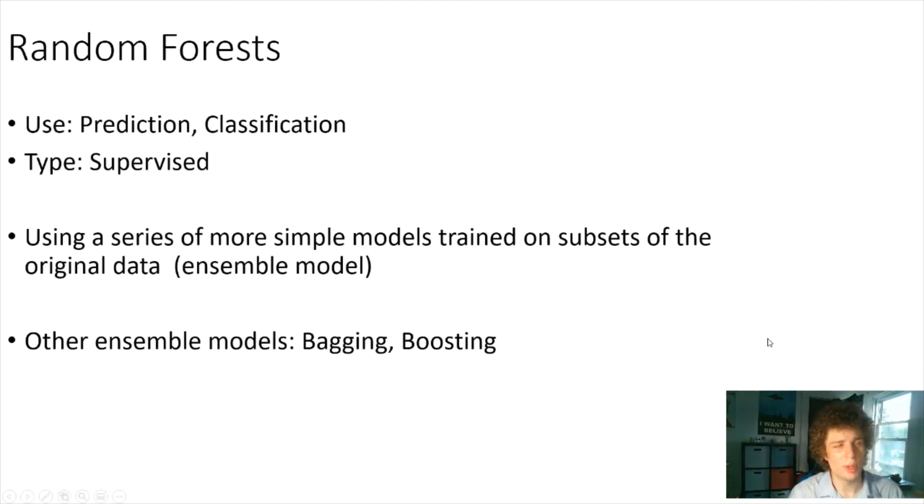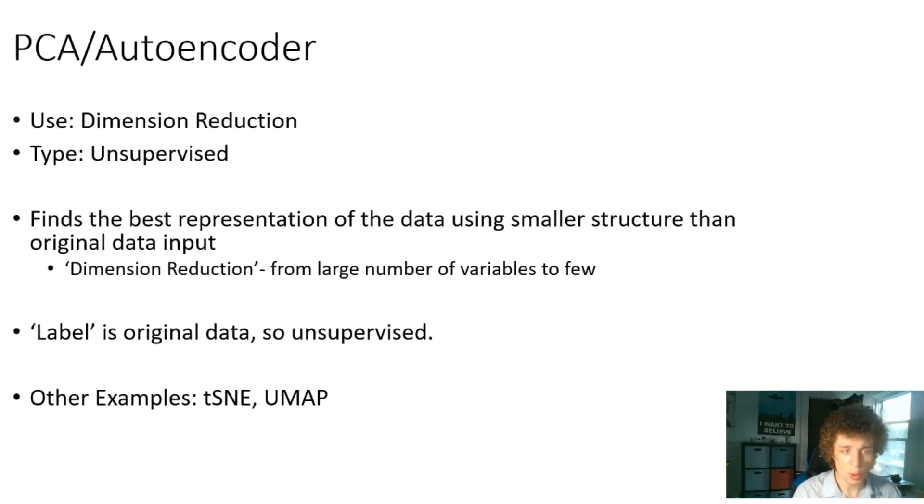Next is random forests. These are used for classification and prediction and are supervised. This idea is you train a series of really simple models based on subsets of the data and combine those models together to get a bigger, large model. This idea is called an ensemble model. There's other common examples called boosting and bagging. I'm not going too much into detail because I don't know if this will be on the CFA.